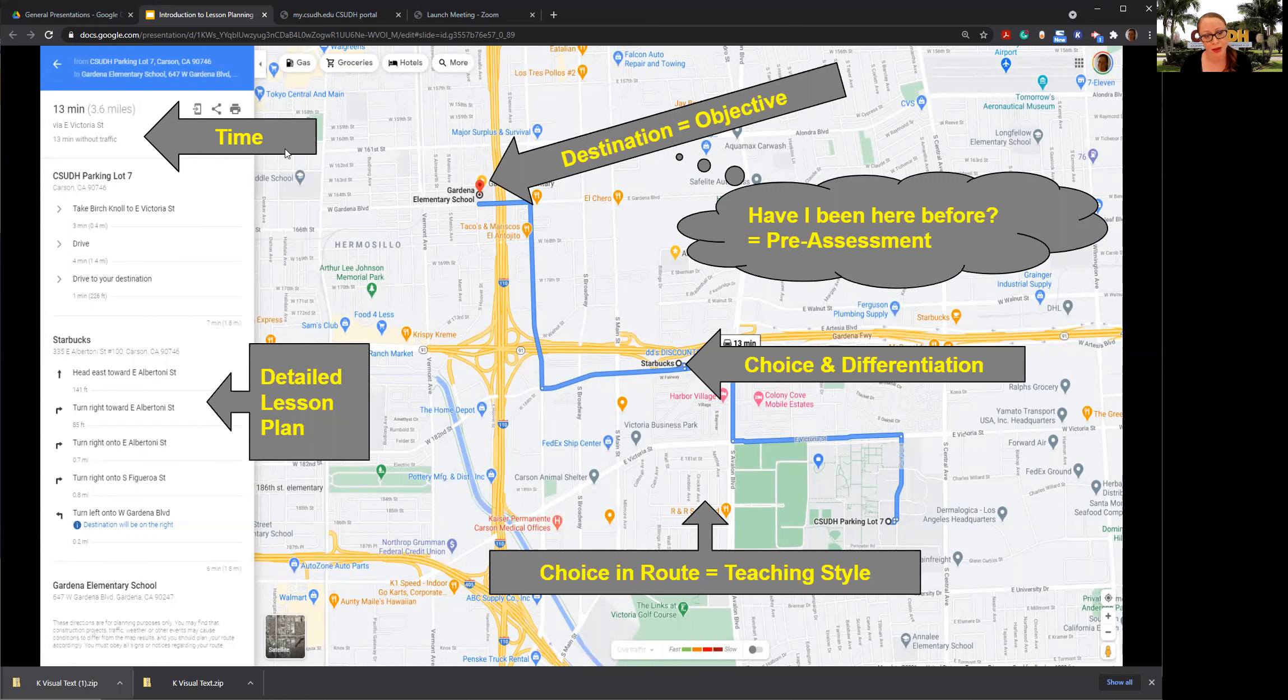If we think about that process, this is essentially what your curriculum map will do for you and what the beginning stages of the lesson planning process is like. Time is always important. Your curriculum map will tell you how long you need to spend on a standard, because this is how important it is. They put a weight to it based on how much time they think it's going to take. This app does the same thing, telling me it's only going to take 13 minutes, 3.6 miles. That's essentially the same as when your curriculum map says spend three weeks on this unit.